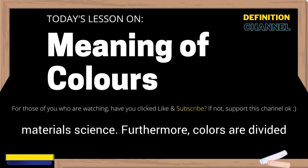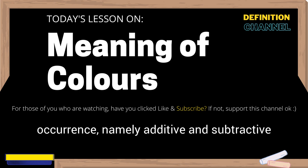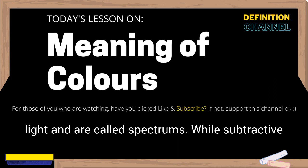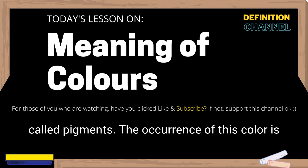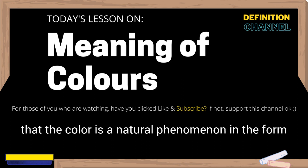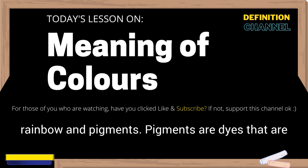Furthermore, colors are divided into two according to the origin of color occurrence, namely additive and subtractive colors. Additive colors are colors that come from light and are called spectrums, while subtractive colors are colors that come from materials and are called pigments. The occurrence of this color is reinforced by Newton's findings, which revealed that color is a natural phenomenon in the form of light containing the colors of the spectrum — the rainbow — and pigments. Pigments are dyes that are soluble in solvents.